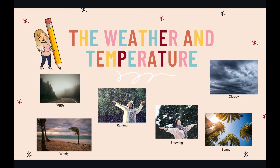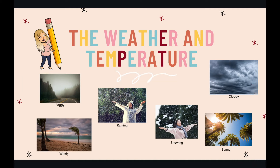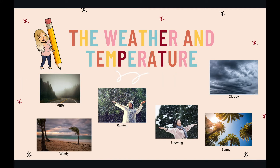Here we have some pictures that are going to be very helpful for us to understand these words. Maybe they are not new for you because you already worked with them. The first one is 'foggy' — in Spanish this is like 'cuando hay neblina en un lugar.' Next is 'raining' — here we have a girl enjoying the rain; in Spanish, 'lloviendo' or 'lluvia.' Then we have the beach with palms, and the weather here is 'windy.'